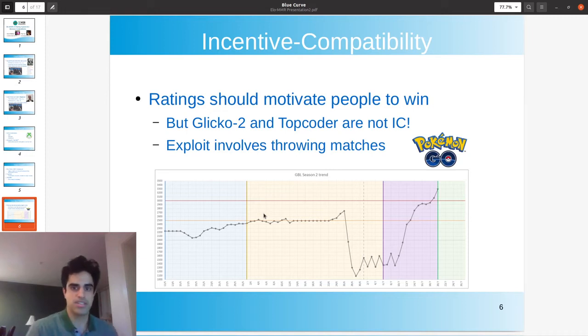And a bad rating system could kind of have the opposite effect. So there was an exploit found where, well, it's known now that the Glico 2 and TopCoder systems are not incentive-compatible. The exploit was found in the Pokémon GO's Battle League video game. So here, by losing matches on purpose, players were actually able to obtain ratings considerably above what they would ever naturally obtain. And of course, you really don't want players losing on purpose. And you don't want the players who do this to be the ones with the top ratings. It really reduces engagement in your game. It makes the rating system less trustworthy.